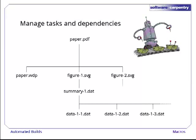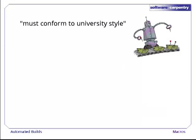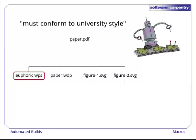We have written a makefile that will automatically recreate the paper we're working on if any of our raw data files change. Just when we thought we were done, our supervisor reminded us that all papers must conform to the university's new style rules. That means that paper.pdf has one more dependency — the official university style file, euphoric.wps.